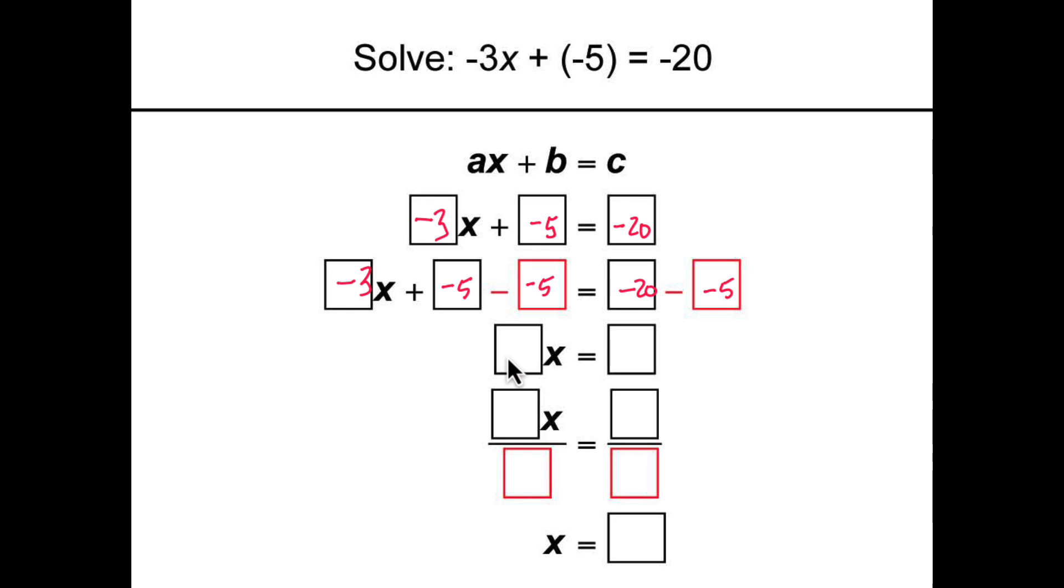Simplifying, we get negative 3x equals negative 20 minus a negative 5 is negative 15. This expression involves multiplication, and to undo it we need to divide.